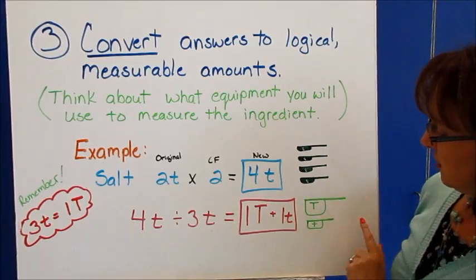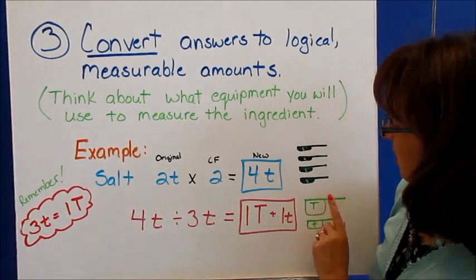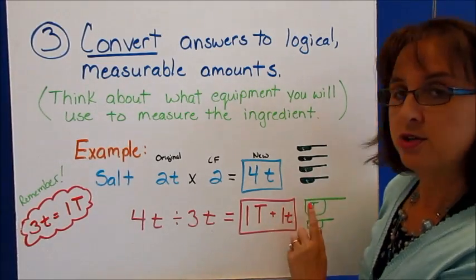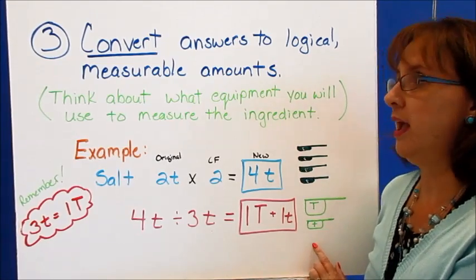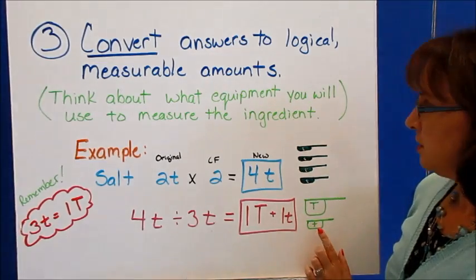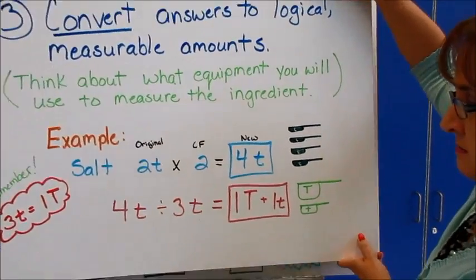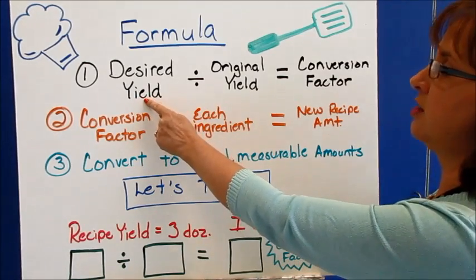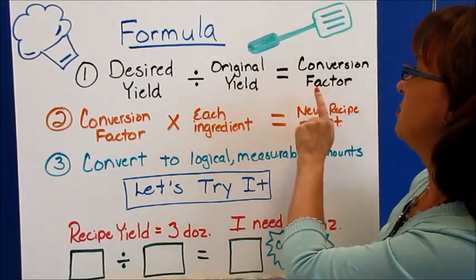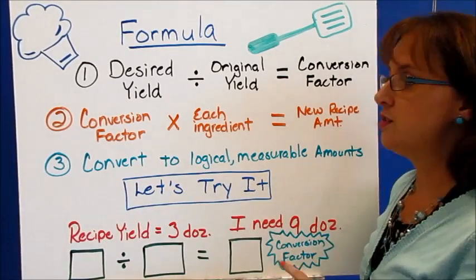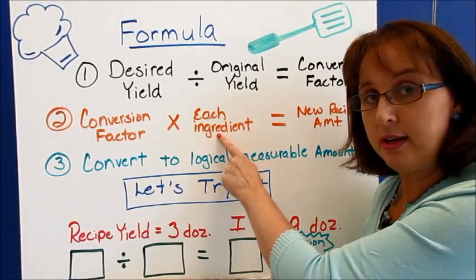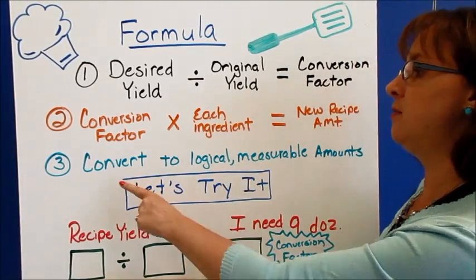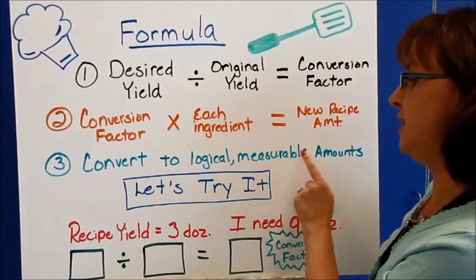Instead of measuring four separate teaspoons, we're only going to measure twice — one tablespoon and one teaspoon. That's a more logical, measurable way. So our steps were: take our desired yield divided by original yield to get the conversion factor; multiply the conversion factor by each ingredient to get the new recipe amount; then convert to logical measurable amounts.